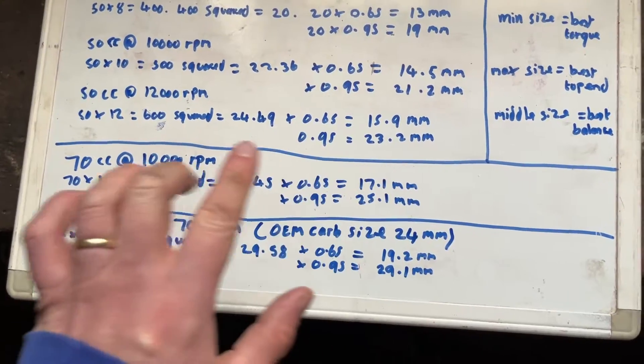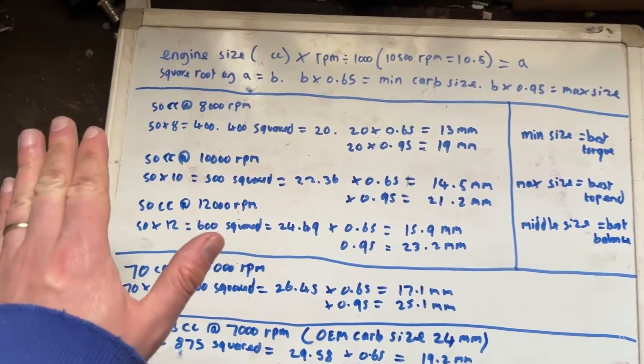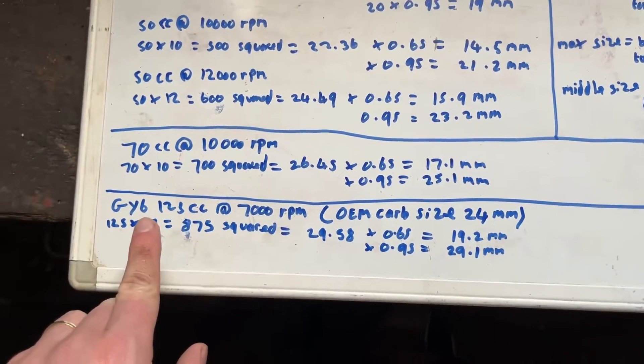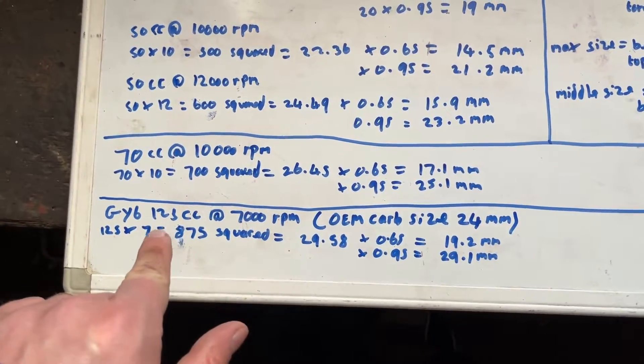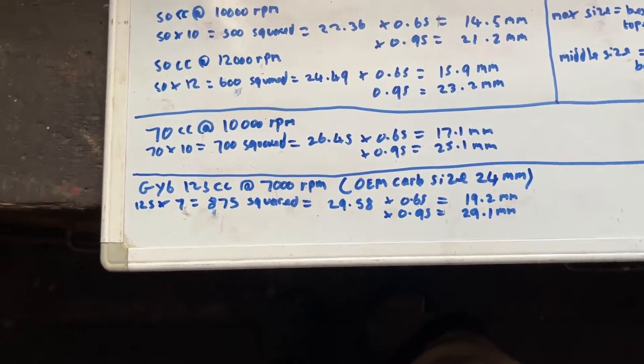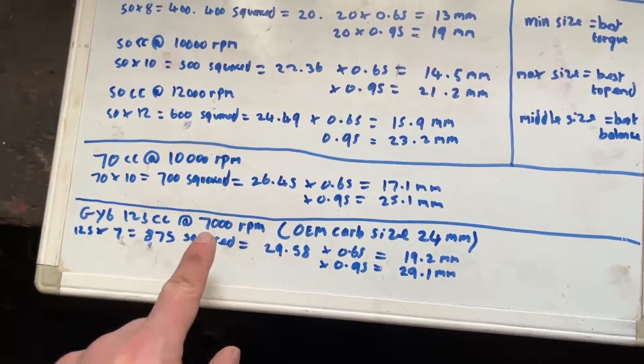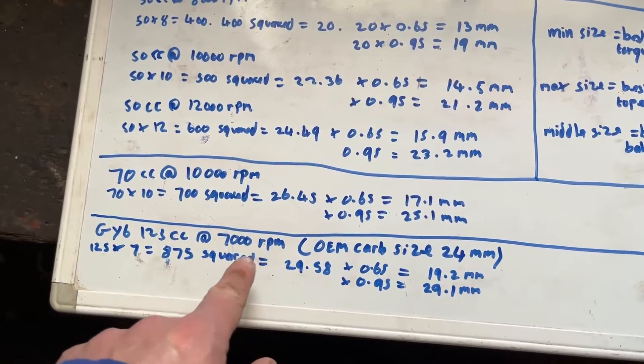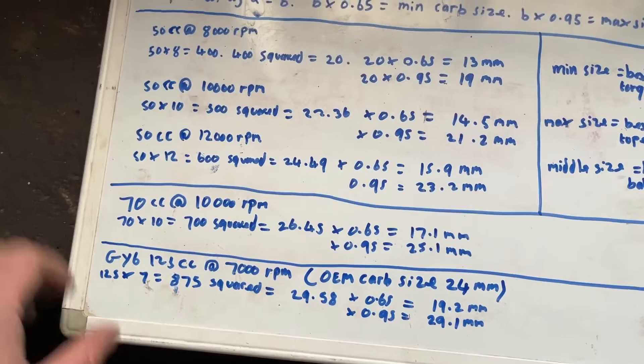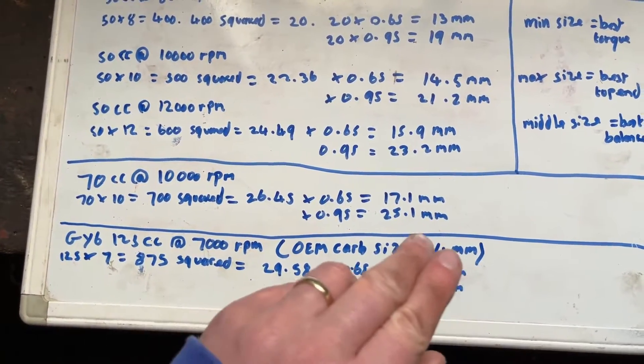So just to show that this calculation does in fact work and isn't just me making stuff up, what I actually have here is the specifications for a GY6 125cc four stroke engine, like you would find in most Chinese scooters. Now they produce their power around 7,000 RPM. Now the OEM carb size, the carburetor size that is fitted from the factory is 24 millimeters.